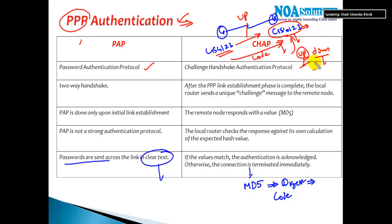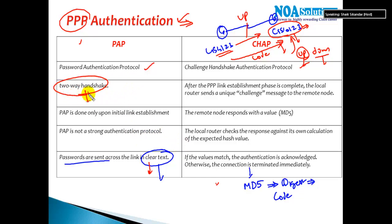The advantage of CHAP is it provides a more secure exchange of the password compared to PAP authentication. Another difference is that PAP uses a two-way handshake whereas CHAP uses a three-way handshake process.